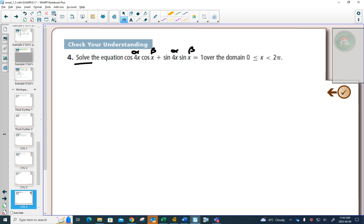And we're like, yes, it is. It's cos alpha minus beta. So that would allow me to take the left-hand side here and change it cos alpha minus beta still equals 1 on the right-hand side.